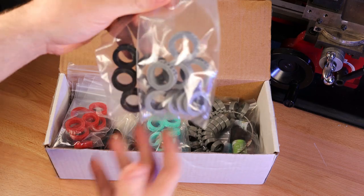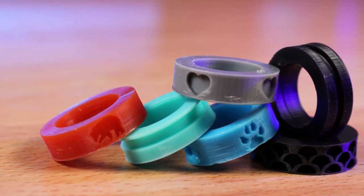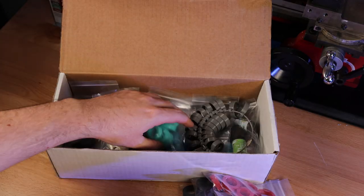First up are these interesting looking ring blanks. These are all actually 3D printed using a UV resin, and these are what I'm going to be making the rings in this video out of. They sent me an absolute ton of these and I'll have plenty to work with.